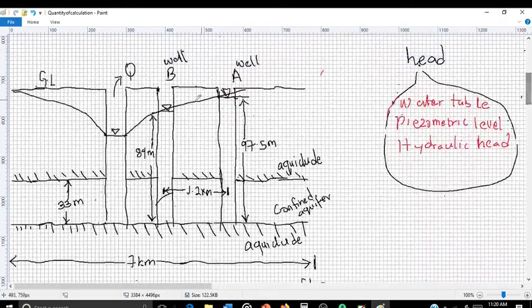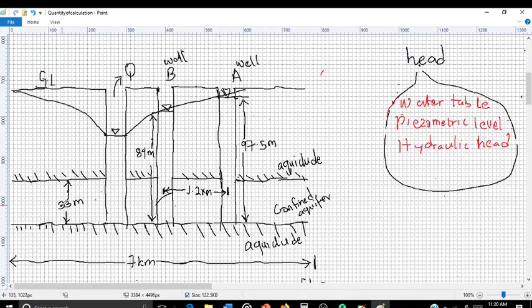As you can see here, we have the thickness of the aquifer given as 33 meters, while the aquifer is 7 kilometers wide. The distance between the two observation wells is 1.2 kilometers. So this is the two observation wells, well A and well B, and the head of well A is 97.5 meters.